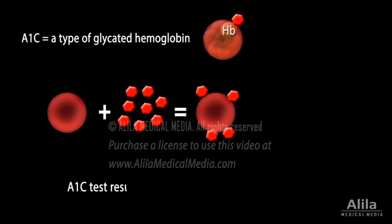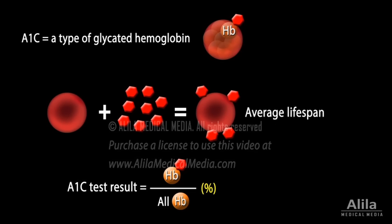The A1c blood test reports the percentage of hemoglobin that is bound to glucose. Once a hemoglobin is glycated, it remains that way in the blood until the red blood cell carrying it is removed from the circulation. Because the average lifespan of a red blood cell is 3 to 4 months, A1c measurement represents the status of blood glucose for the past 3 months or so.